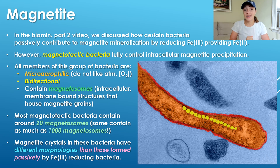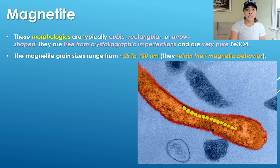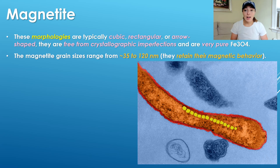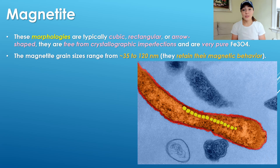Magnetite crystals in these bacteria have different morphologies than those formed passively by iron-reducing bacteria. They have controlled morphologies that are always either cubic, rectangular, or arrow-shaped. They are free from crystallographic imperfections and are very pure magnetite — iron 3O4. This basically implies that these bacteria have the ability to weed out possible contaminant ions that might impurify their magnetite. They can produce really pure and crystallographically perfect magnetite crystals, which is insane.